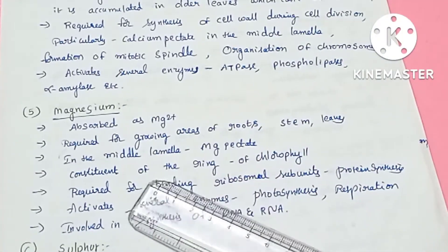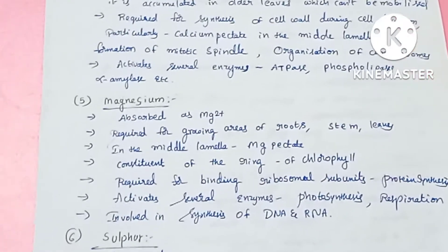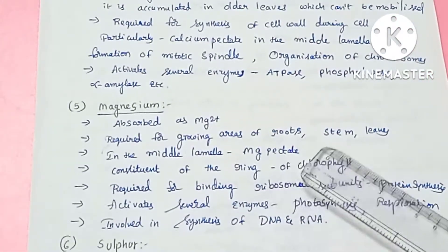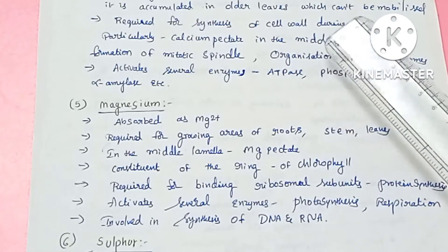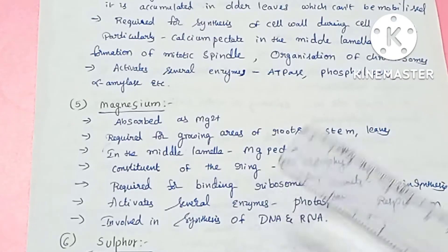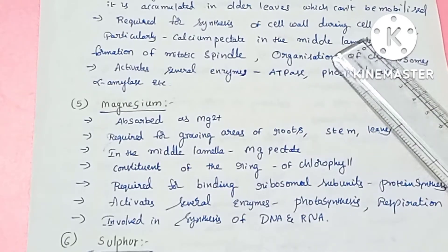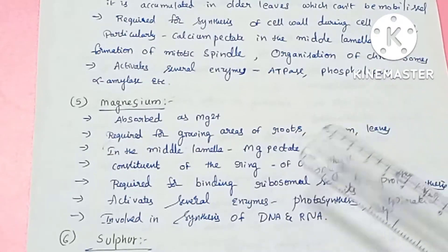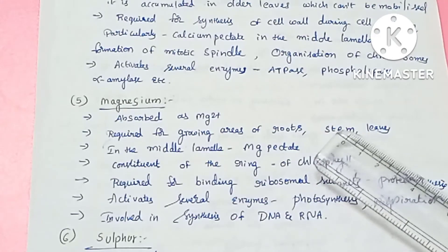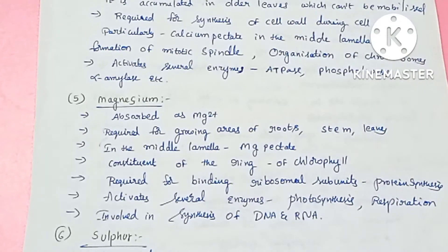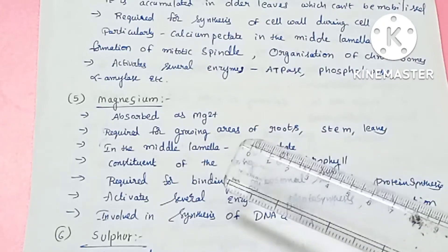Magnesium is required for growing areas — roots, stems, and leaves. Like calcium, magnesium pectate is required in the middle lamella regions of the cell wall.